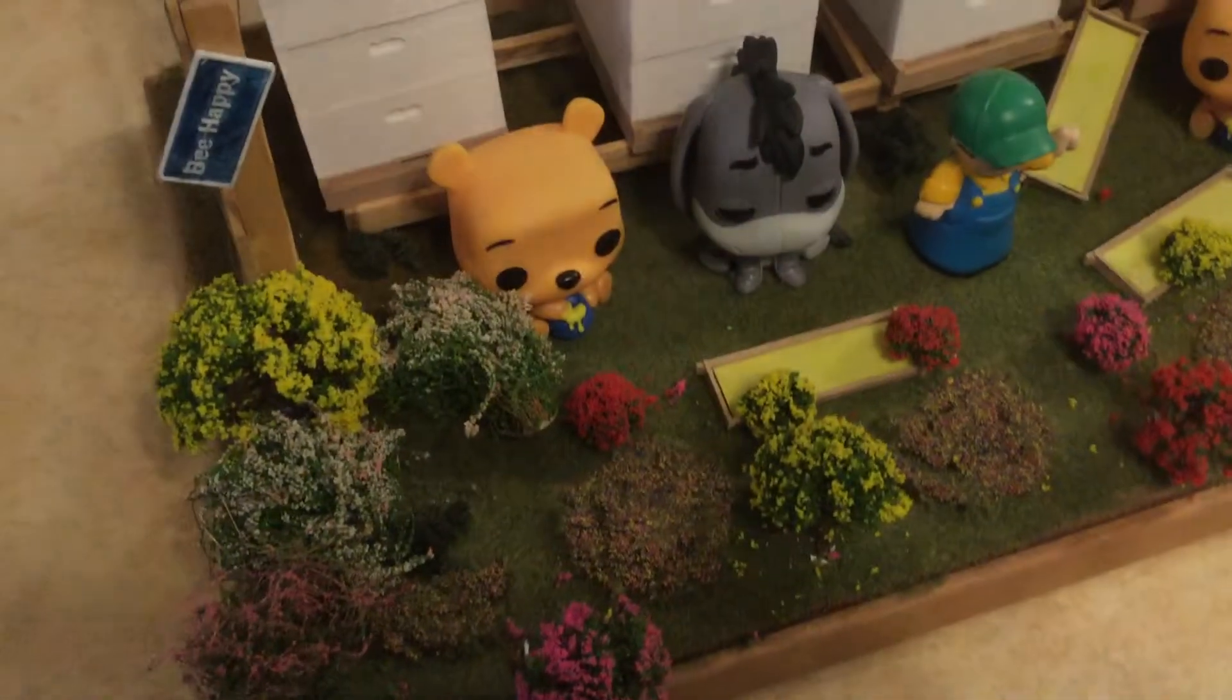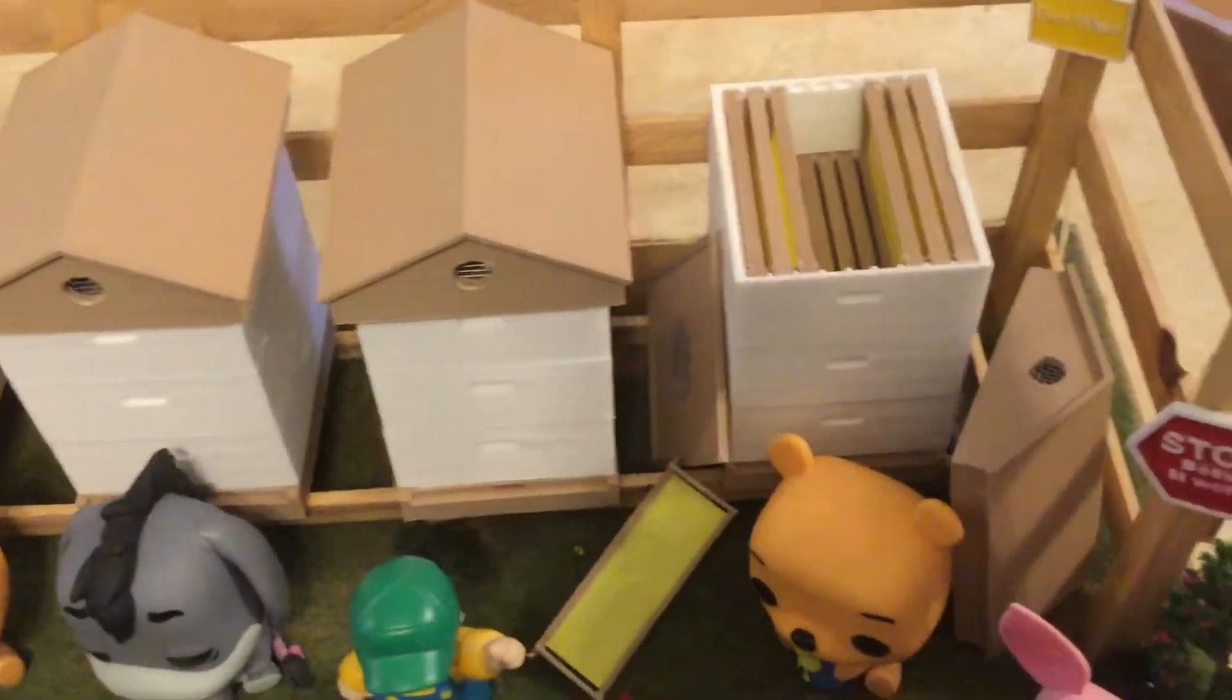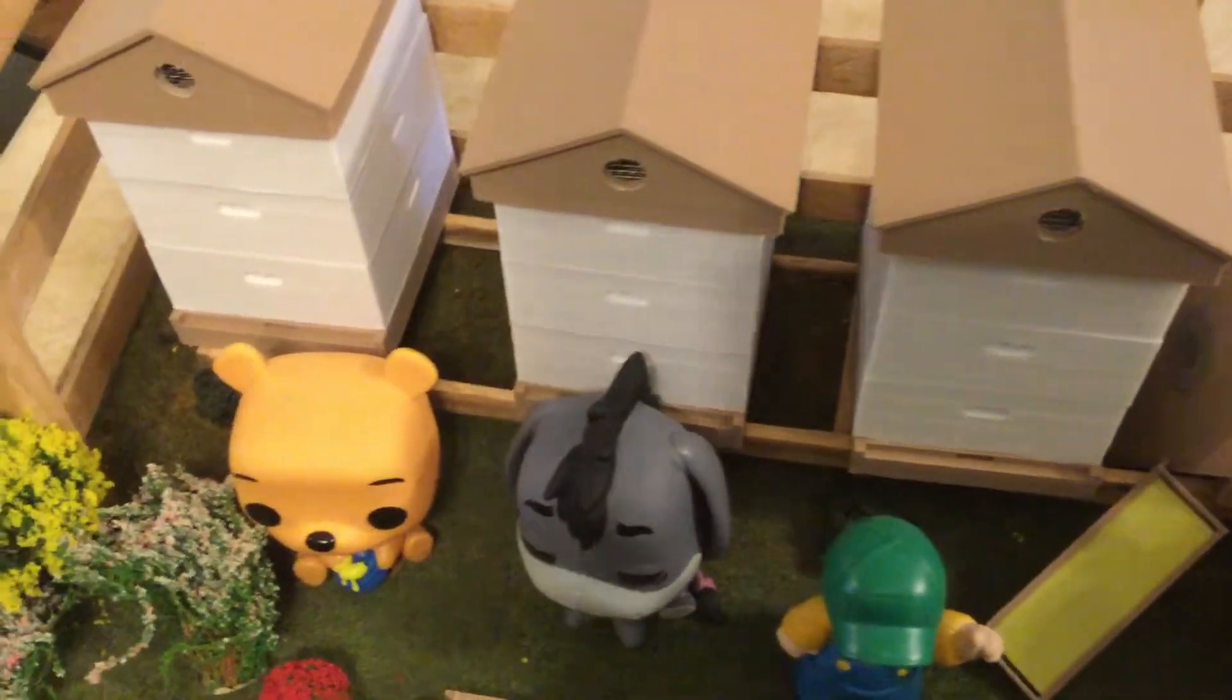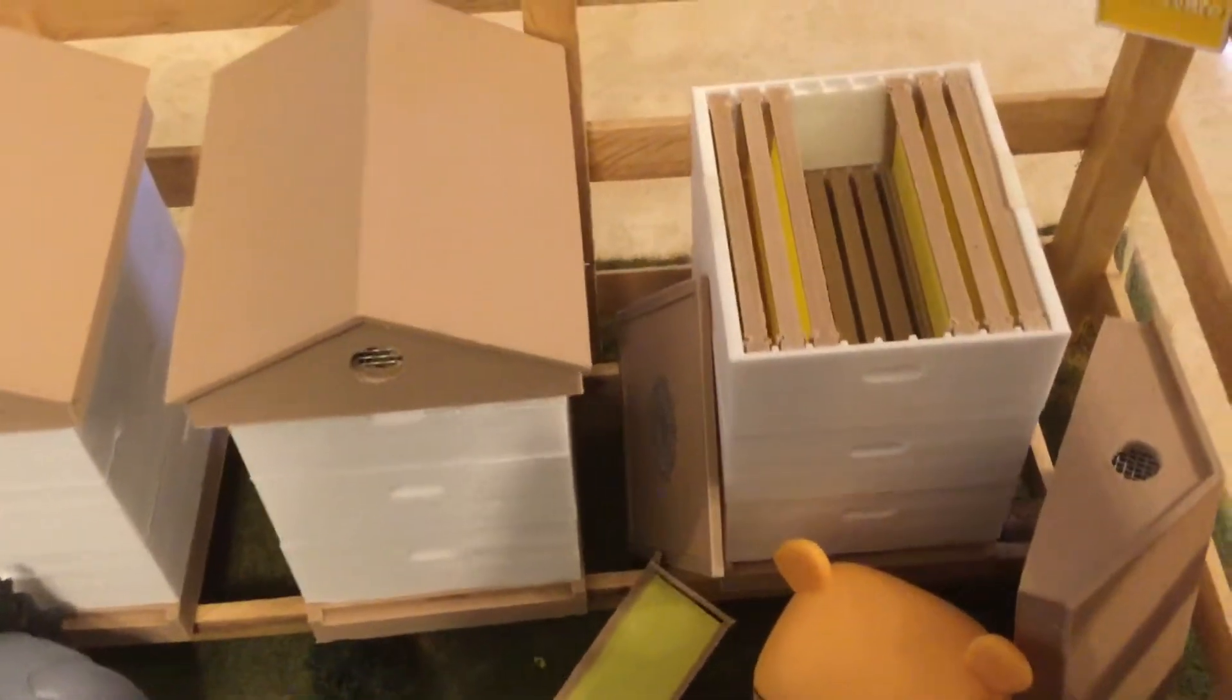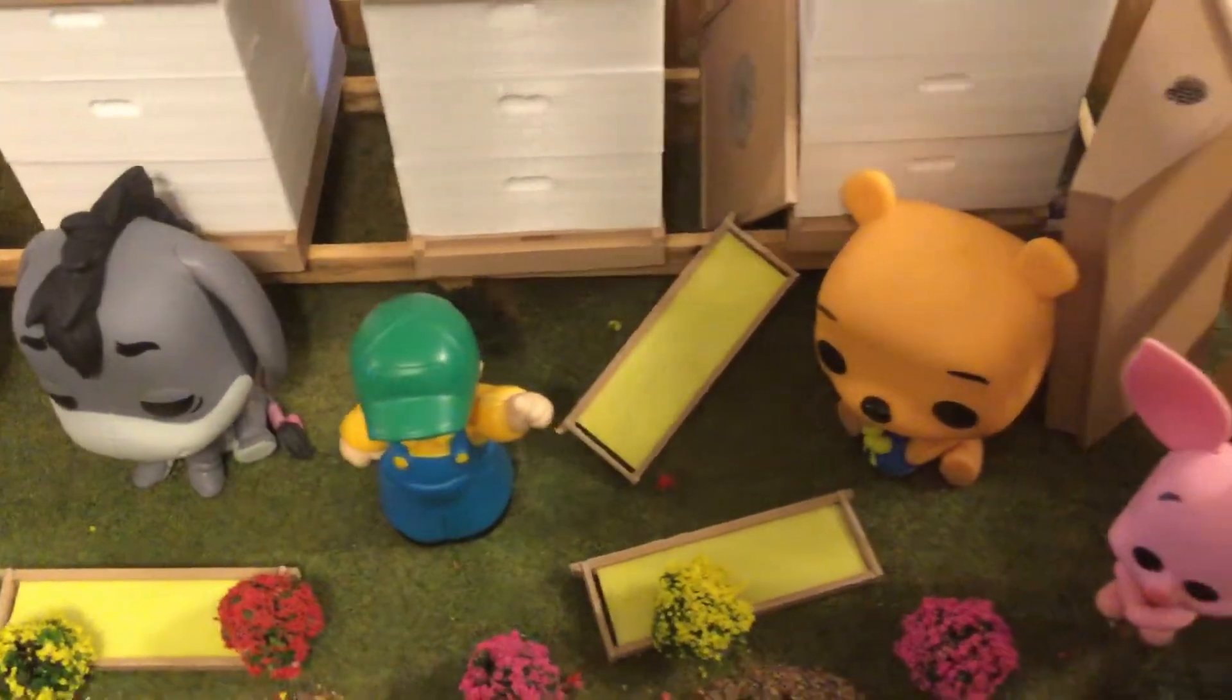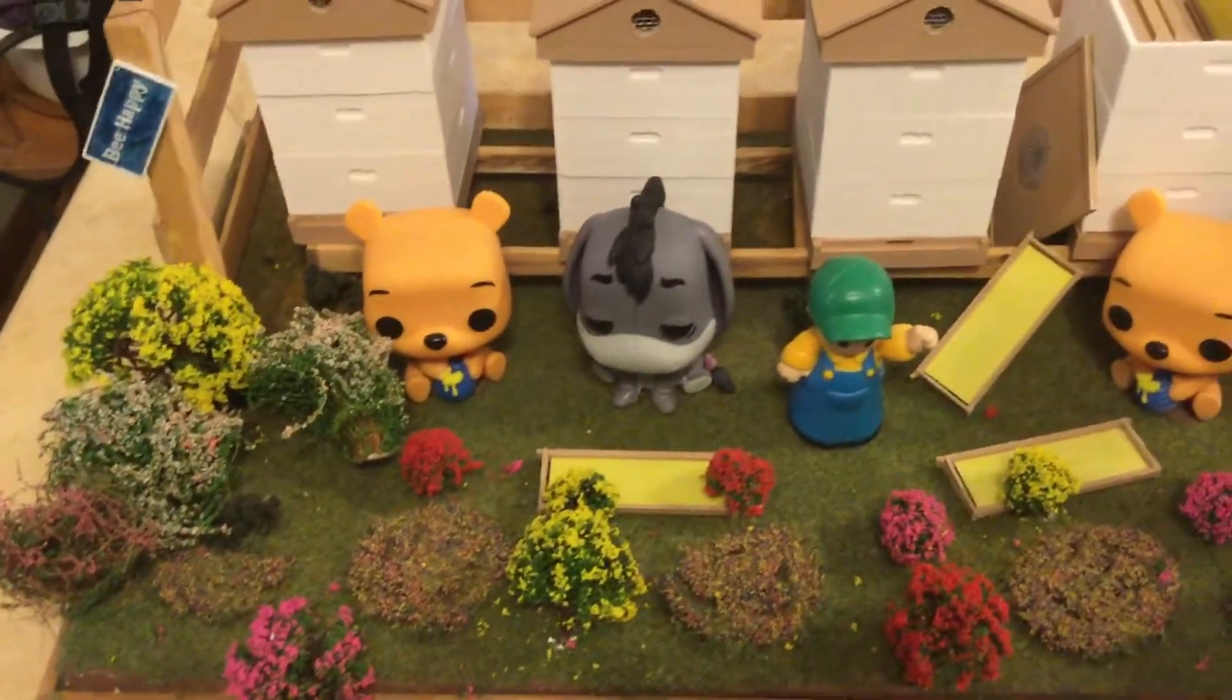So this is one of the dioramas I've done after printing out a number of my miniature beehives. As you can see I got a couple of Winnie the Poohs on there, got a bunch of flowers and I have four hives set on a wooden hive stand with a back fence and I've got a couple of little signs that are printed out. And you can see that Winnie the Pooh has pulled out a few of the honey frames and sharing them with his friends. So that's just one of the things I've done with my 3D printing.